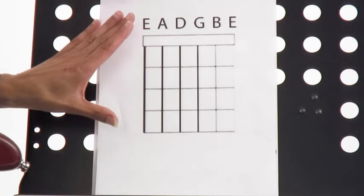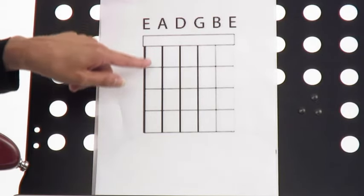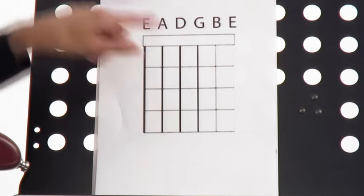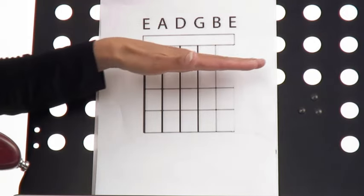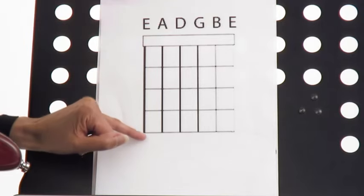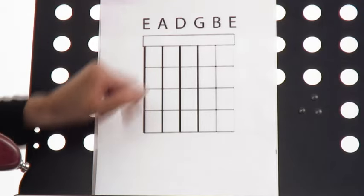The chord box will look like this. The lines coming down represent the strings, and the lines going across horizontally are the frets. This is the sixth string, the low E, the thickest string, and this is the thinnest string, the high E.